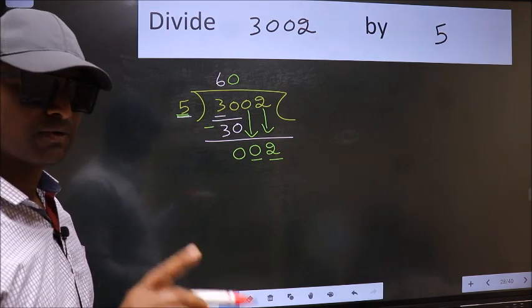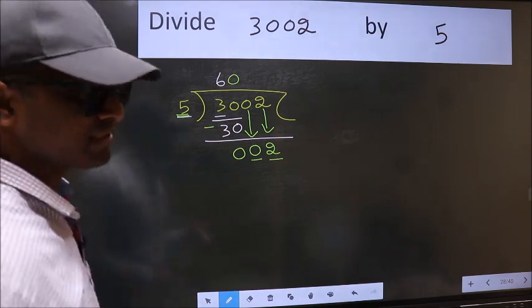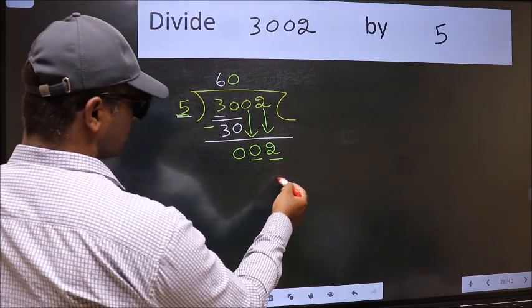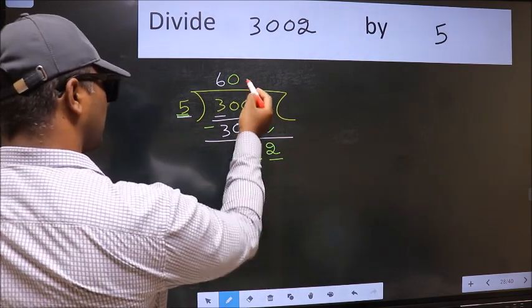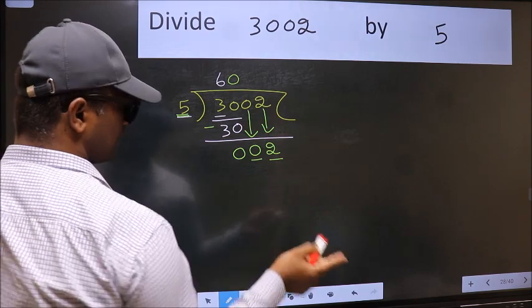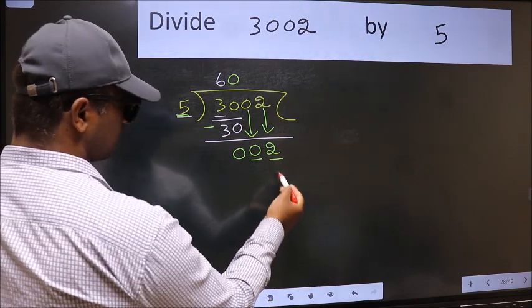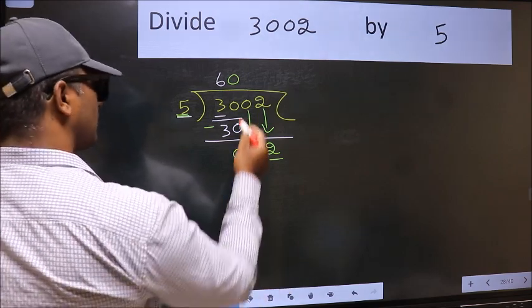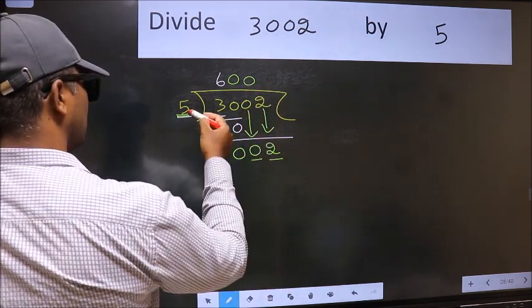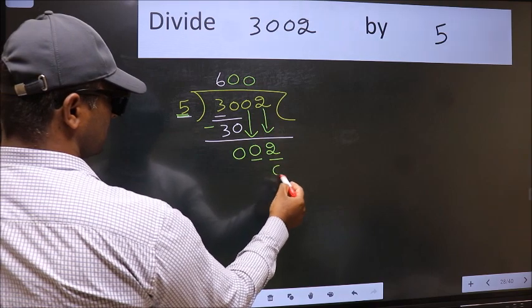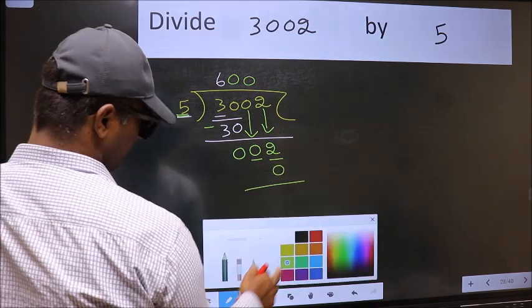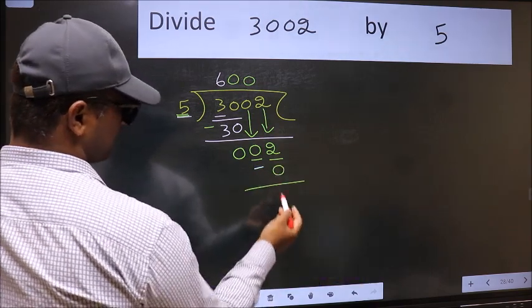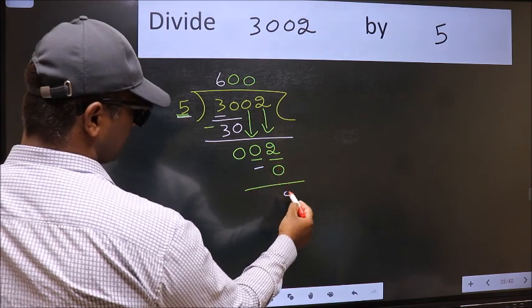Instead, what you should think of doing is which number should we take here? If I take 1, we will get 5, but 5 is larger than 2. So what we should do is we should take 0. So 5 into 0 is 0. Now we should subtract. 2 minus 0 is 2.